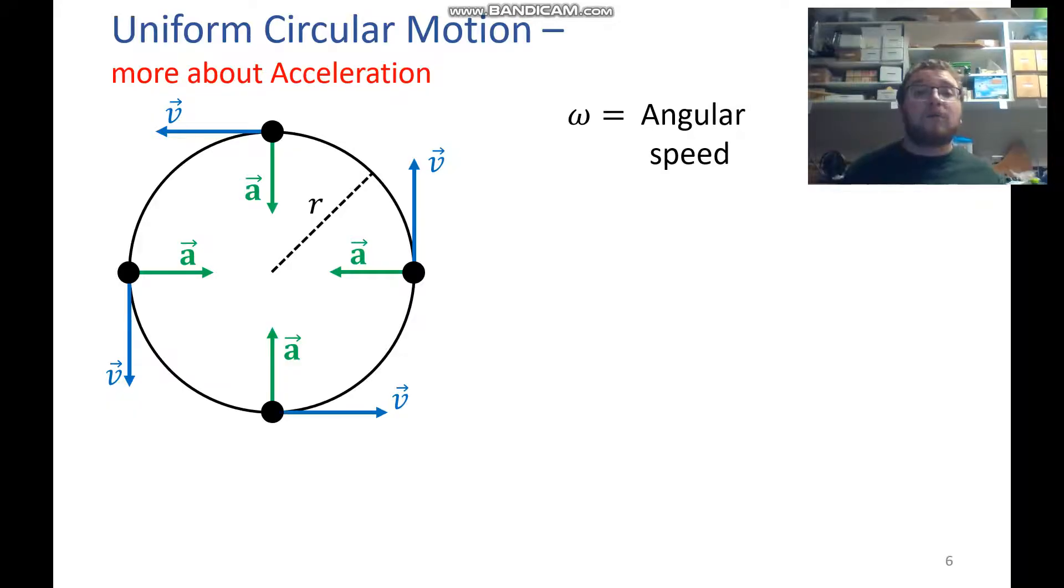We can say that something is moving with an angular speed. So here, in this example, our angular speed would be counterclockwise. This dot is moving in a counterclockwise circle, and we represent that with the Greek letter omega.